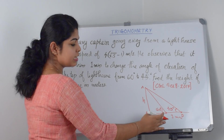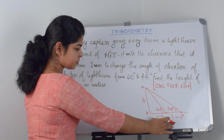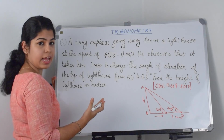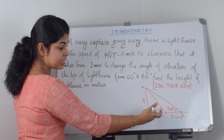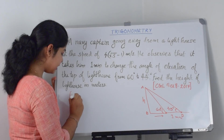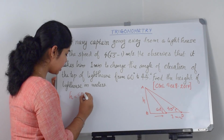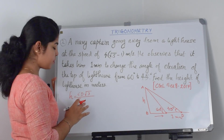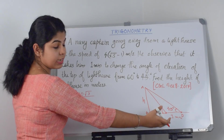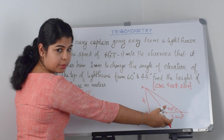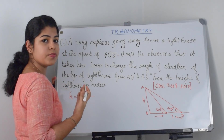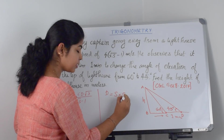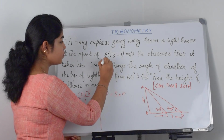Please note that the distance CD is not directly given here — only the time is given. We are asked to find the height of the lighthouse. For angles 60 degrees and 45 degrees, the formula to find height is h equals cd times root 3 over root 3 minus 1. Now we have to substitute the value of cd, but it is given in terms of time, so we need to find the distance first. The basic formula is distance equals speed times time. The speed is 4 times root 3 minus 1.